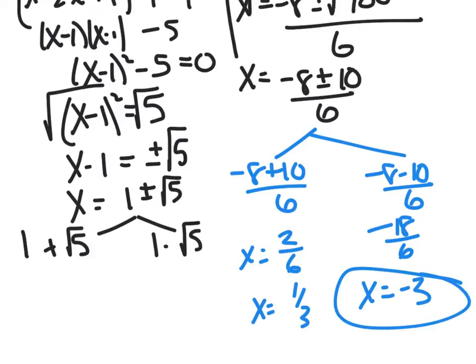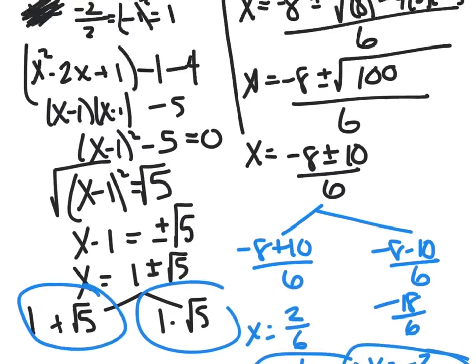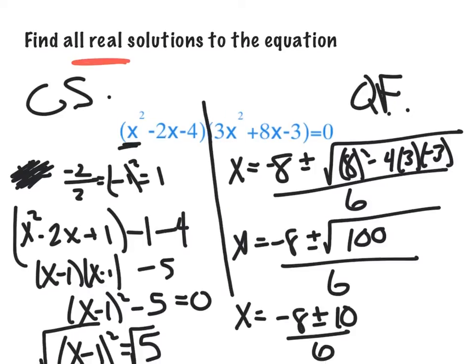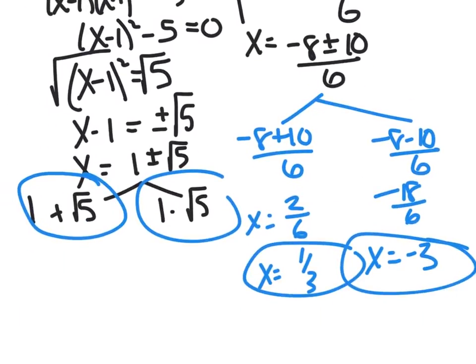So again, I have four solutions, which makes sense — if I were to multiply this out, my highest degree would be x to the fourth, implying I could have at most four solutions.